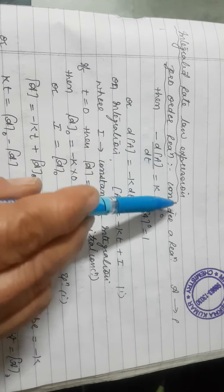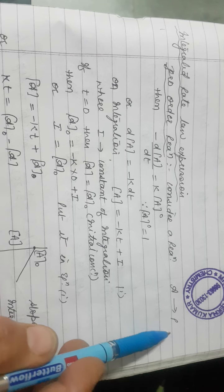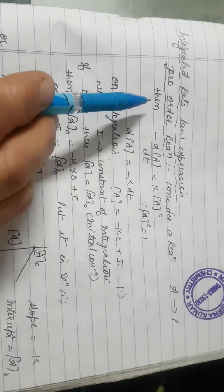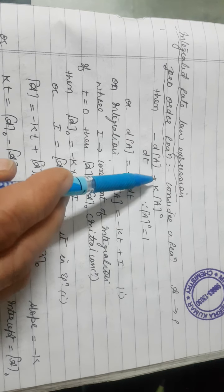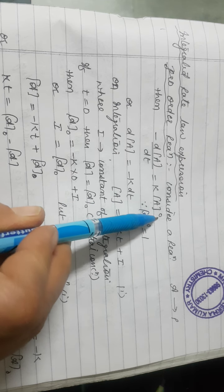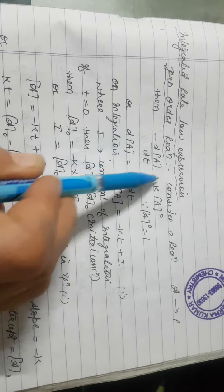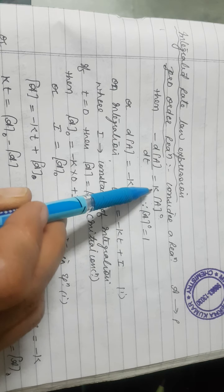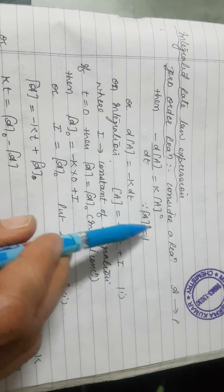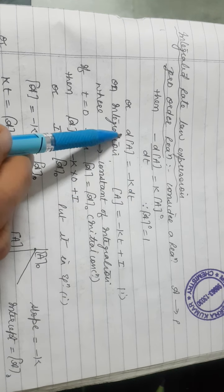Now, integrated rate law expression. For zero order reaction — consider a reaction A → product. The rate of reaction equals K times the concentration of reactant raised to the power of the order. For zero order: −d[A]/dt = K[A]⁰ = K, since A to the power zero equals 1. So −d[A]/dt = K, therefore d[A] = −K dt. Integrating: A = −KT + I, where I is the constant of integration.